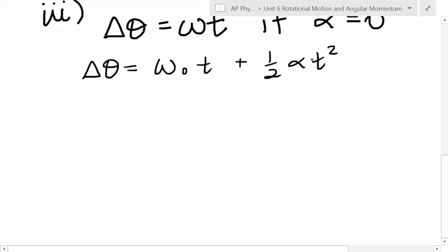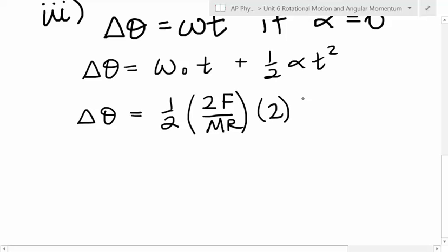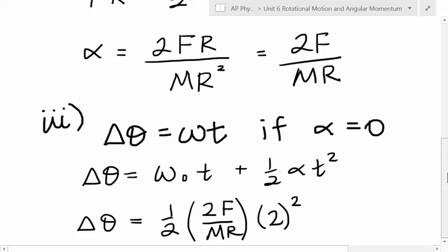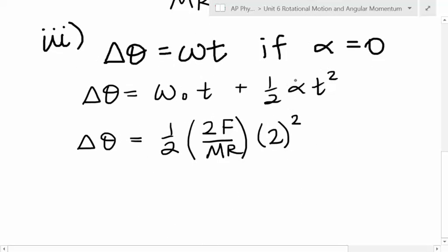So, I can use the idea that the change in position is equal to omega naught T plus one half alpha T squared, because guess what? Rotational motion follows the same rules that linear motion does. We have motion, we have forces, we have energy, we have momentum, all of those things for objects that move in a circle. So, if I want to find delta theta and it starts from rest, it will be one half alpha, which I believe was two F over MR times T squared, which I gave you a number of two. That would be the change in angular position. That's it. That's all for that one.